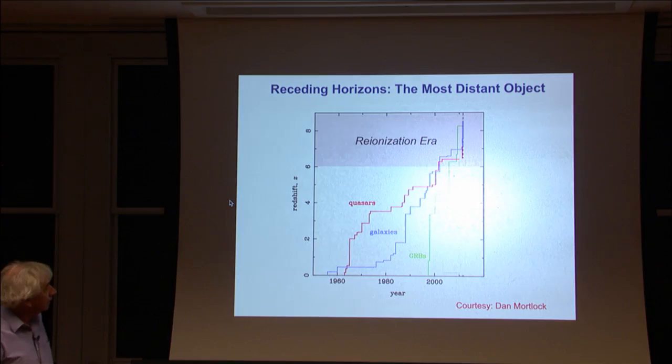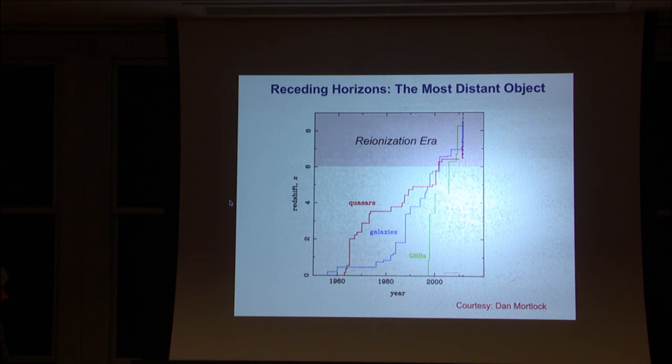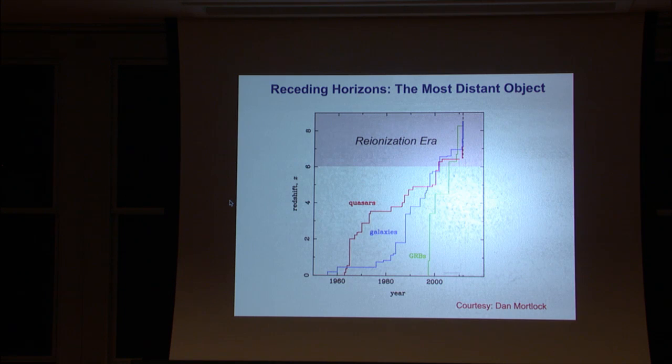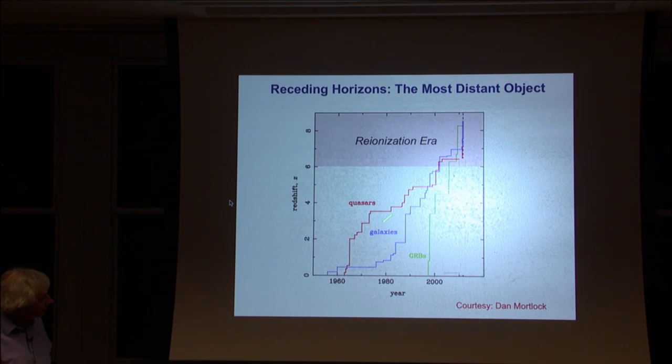The exciting thing is that we're now observing galaxies in what we think is this reionization era. As an old man, I like this slide very much because it encapsulates the history over my involvement in astronomy from when I was an undergraduate, when the most distant galaxy was a mere redshift of 0.5 or so, and quasars had just been discovered. You can see for many years, during the 70s and 80s, quasars were the most distant known objects in the universe. Only really with the onset of the Keck telescope and Chuck Steidel and his group and others finally managed to find star-forming galaxies at redshifts of 5 and so.